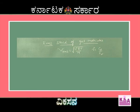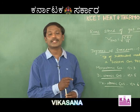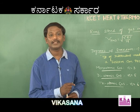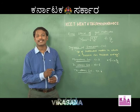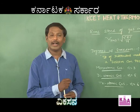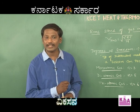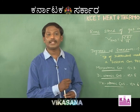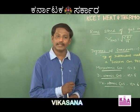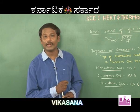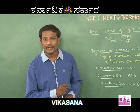What is gamma? Gamma is a constant called the ratio of specific heats, that is C_P by C_V. R is the universal gas constant, T is temperature, and M is molecular weight.